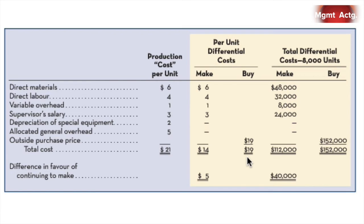So it's really only costing us directly $14 to make. If we stopped making it, we'd save $14 per unit. The company outside wants to sell it to us for $19 — that's an extra $5. Making 8,000 units, that turns into $40,000. The avoidable costs on 8,000 units are $112,000. We'd pay $152,000 to buy it. We'd avoid $112,000 — it's costing us $40,000 more to buy — making it is $40,000 in our favor. Sometimes looking at all-in costs per unit including allocated overhead leads to the wrong decision, because a lot of costs simply can't be avoided.